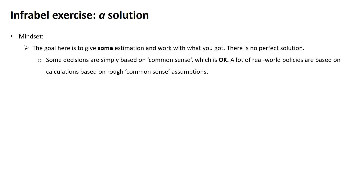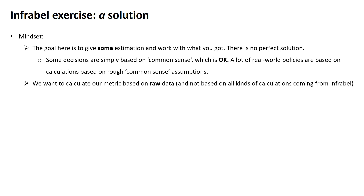This is perfectly okay. A lot of real-world policies are based on calculations with very rough common sense assumptions — for example, economic growth estimates for a country can be off by a couple of billions. Second, we want to calculate our metric based on raw data, so we don't want to use data that has already gone through all kinds of calculations from InfraBell. Because InfraBell measures delays in a particular way — a delay is only a delay when a train has a delay of more than six minutes. We want to start from scratch and calculate our own delay metric. So we basically don't trust InfraBell.